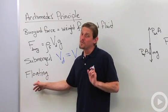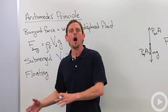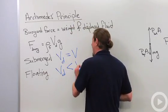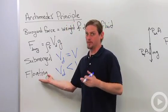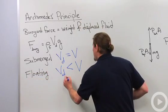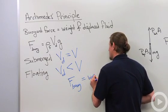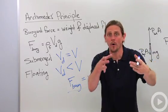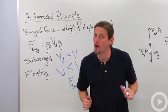If the object is floating, on the other hand, that means it's not all the way immersed. The volume displaced is actually less than the whole volume because some of it is floating on top. In the floating situation we always have that the buoyant force is equal to the weight of the object, because the object is floating and that means its weight has to be canceled by an upward force — and that upward force is the buoyant force.